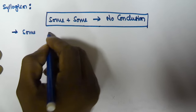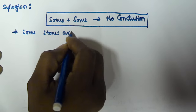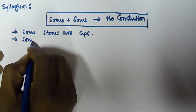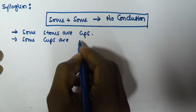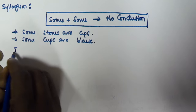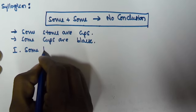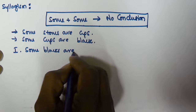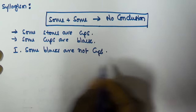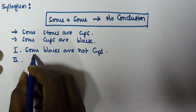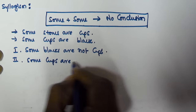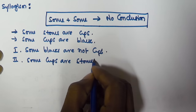Let us consider two syllogism statements. The first one is: 'Some stones are cups.' The second syllogism given is: 'Some cups are black.' The first conclusion given is: 'Some blacks are not cups,' and the second conclusion given is: 'Some cups are stones.'